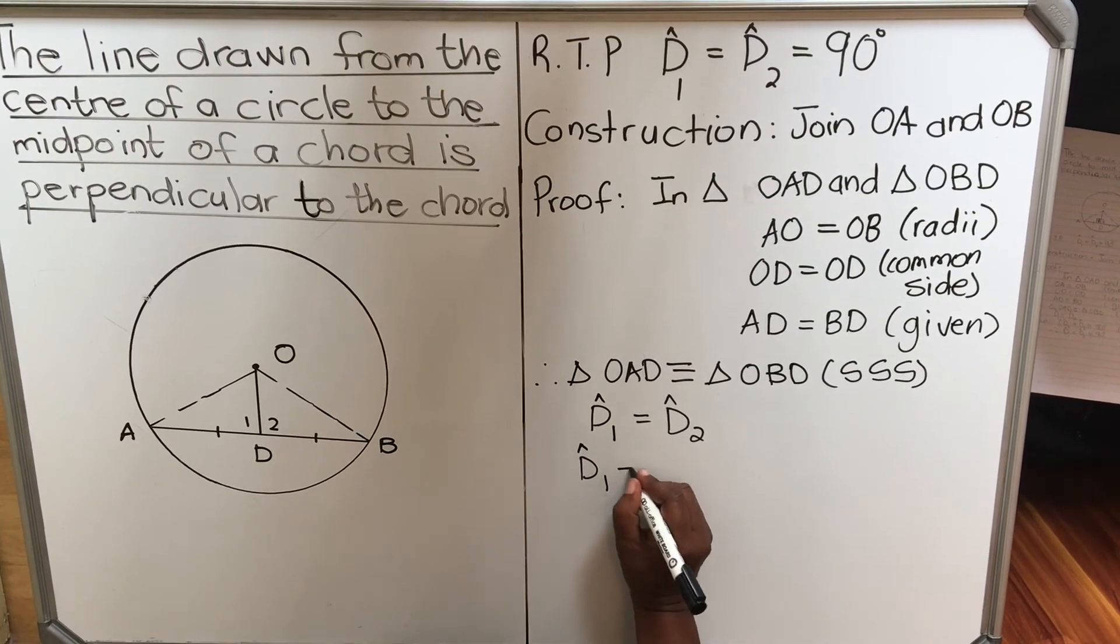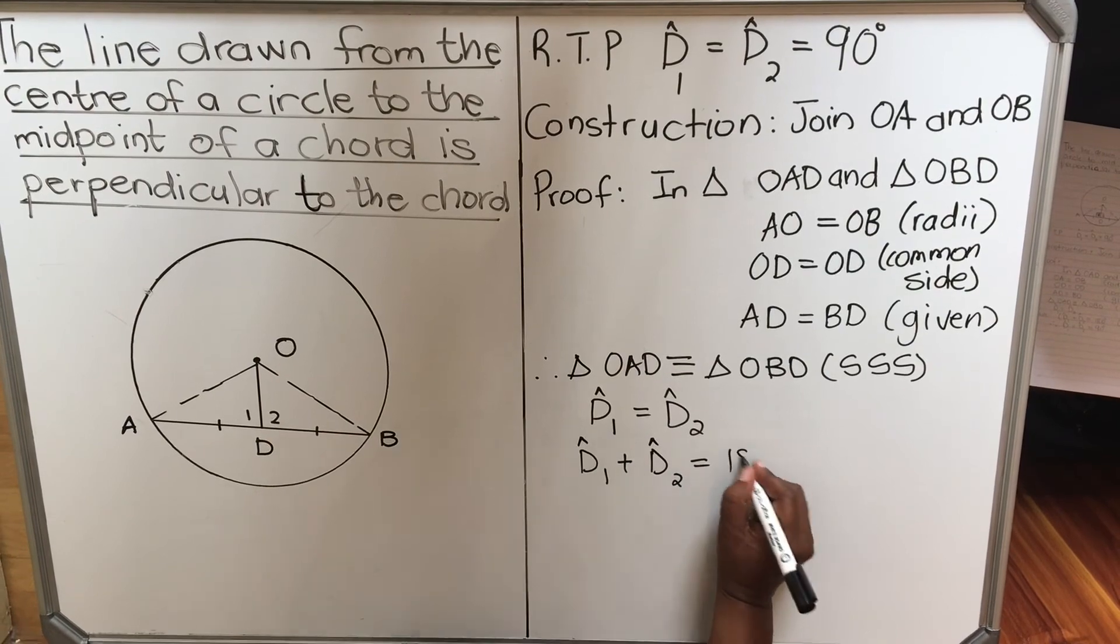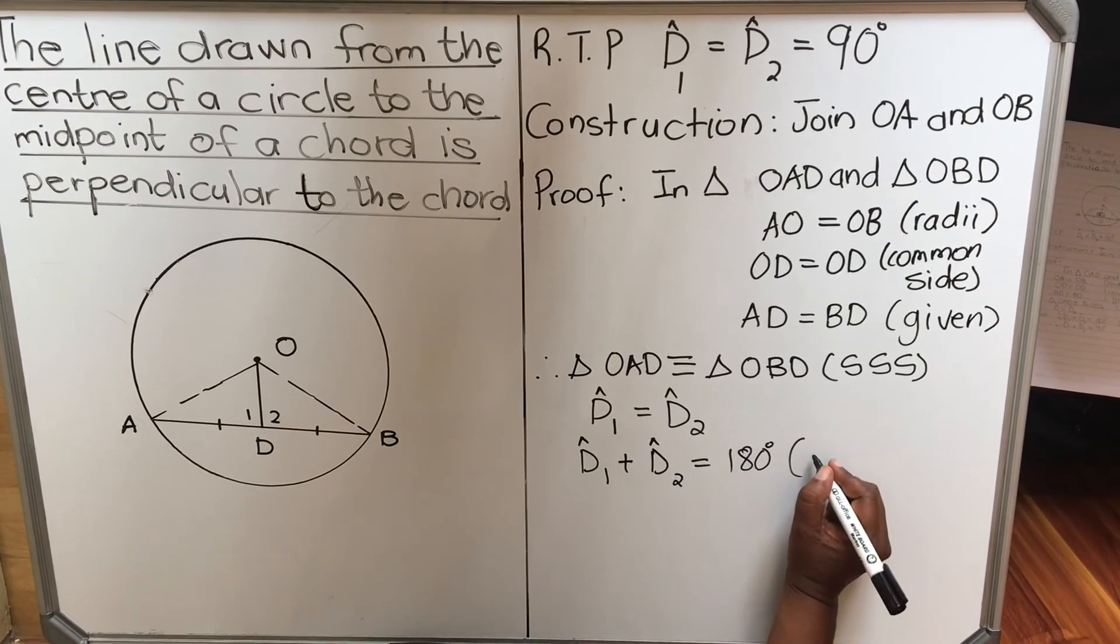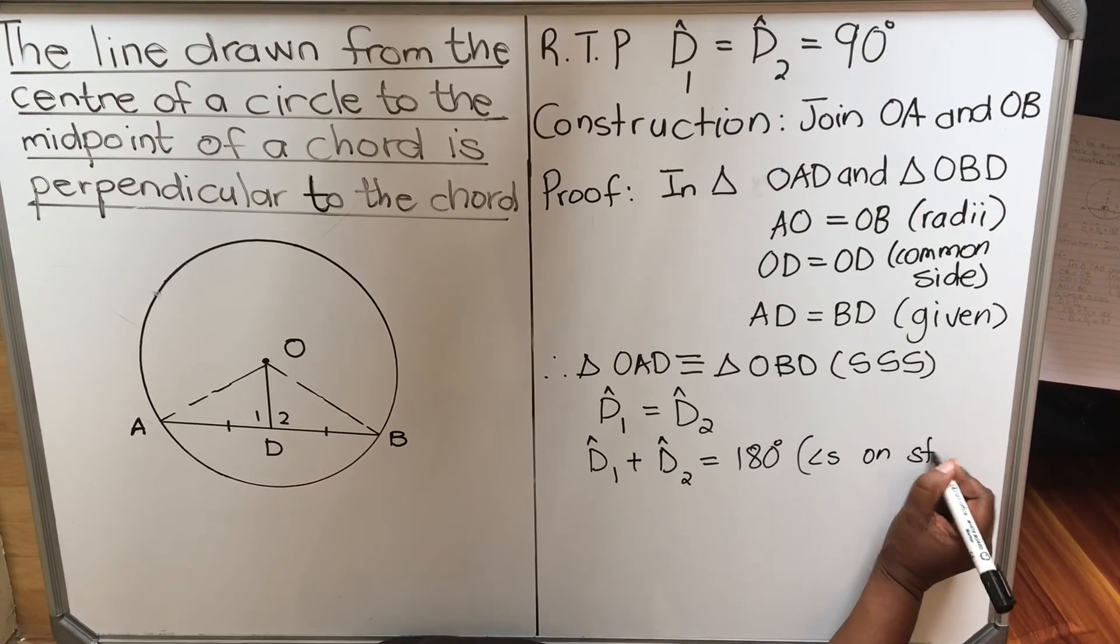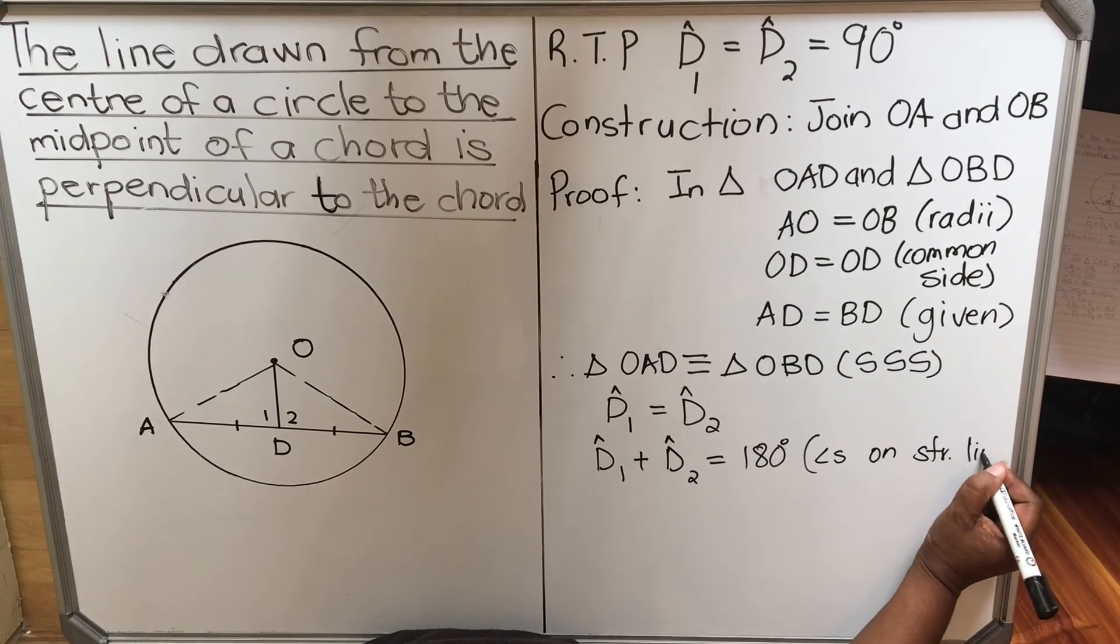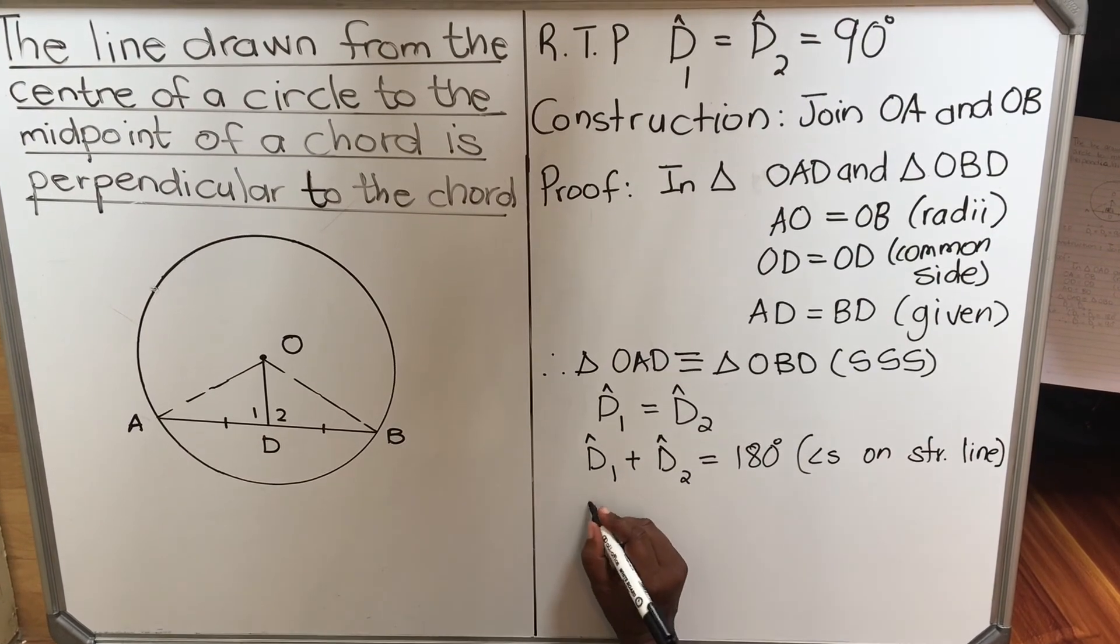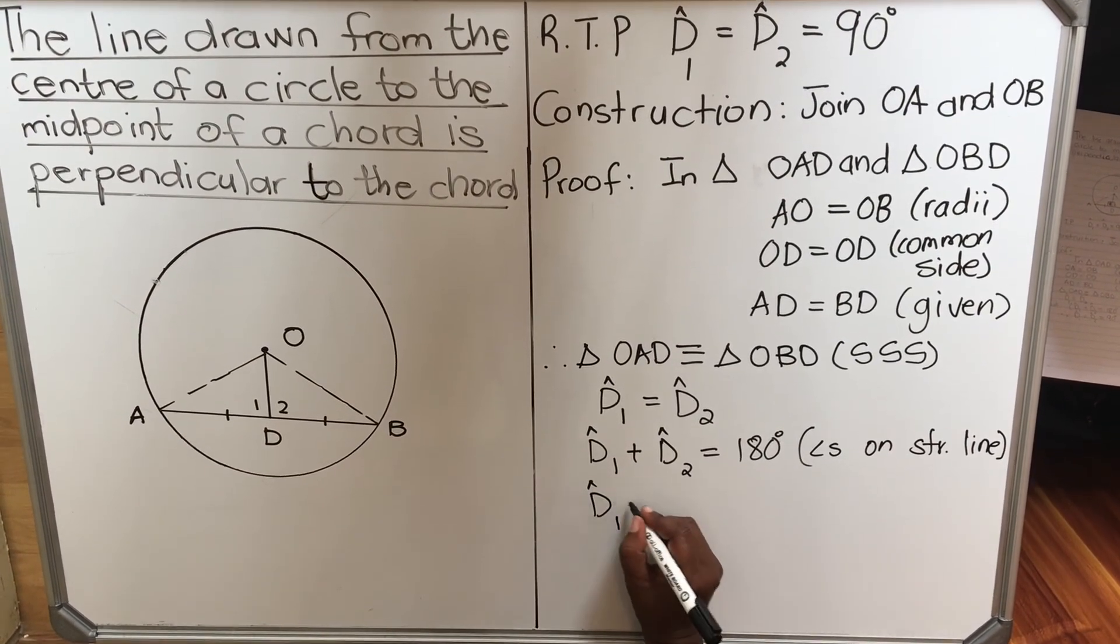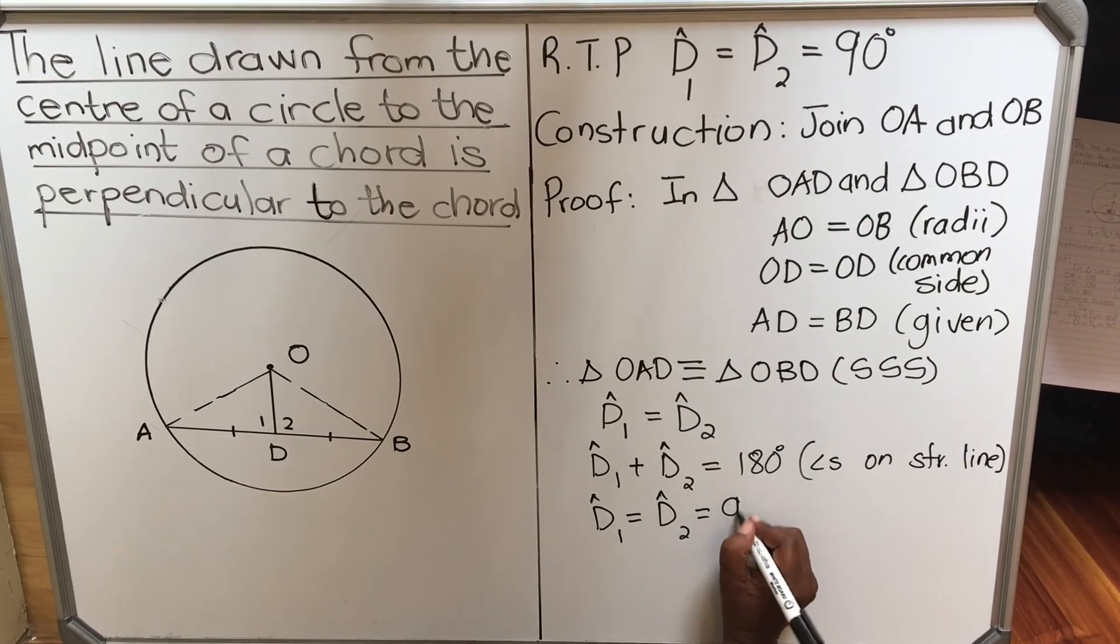Angle D1 plus angle D2, they're equal to 180. And the reason is angles on a straight line. Now, if these two are equal, it means that D1 is equal to D2, and they're both equal to 90.